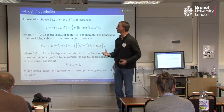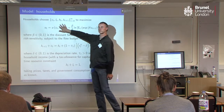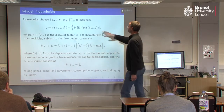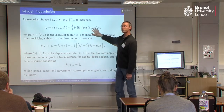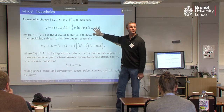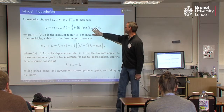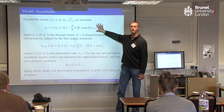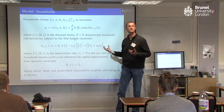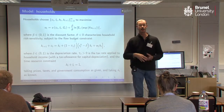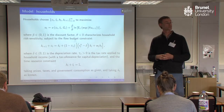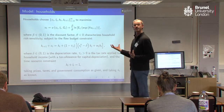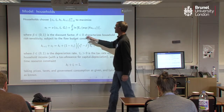What the risk sensitivity does is it introduces curvature over this continuation value, so it makes the agent averse to risk in their lifetime utility. And that's what it's going to try to protect itself against when it's making its decisions today. So lowercase letters here are going to represent household level variables, capital is going to be an aggregate level variable, and G here is the government services that are provided by the fiscal authority.